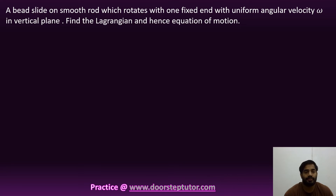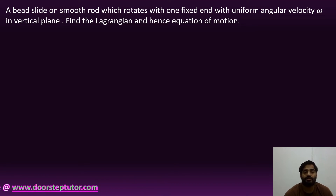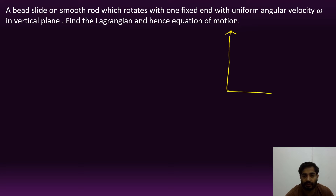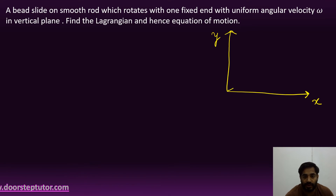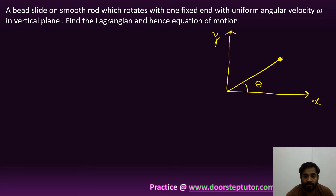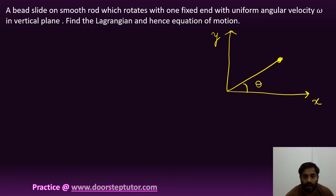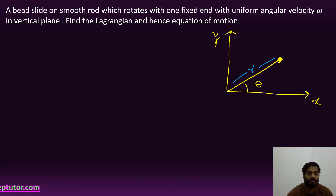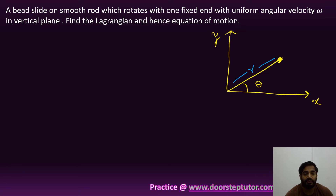The question is: a bead slides on a smooth rod which rotates with a fixed axis and uniform angular velocity omega in a vertical plane. First, draw the vertical plane — a plane like this represents the vertical plane. The approach is to first write the equation for kinetic energy, then for potential energy, and then substitute them into the Lagrangian.